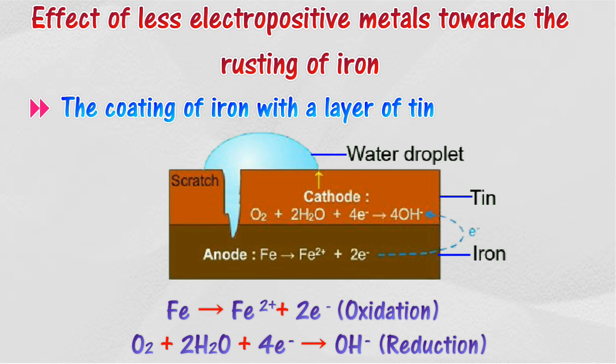Electrons released flow to the tin, causing the rusting of iron to occur rapidly. Electrons flow to the tin and are gained by oxygen and water to form hydroxide ions at the cathode.